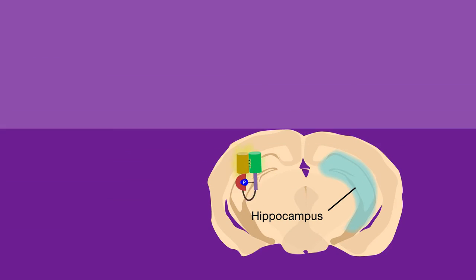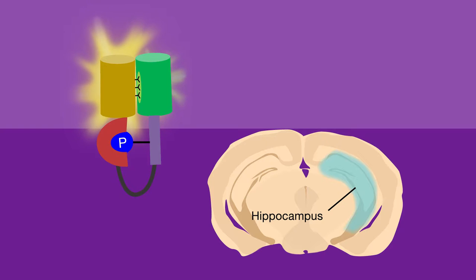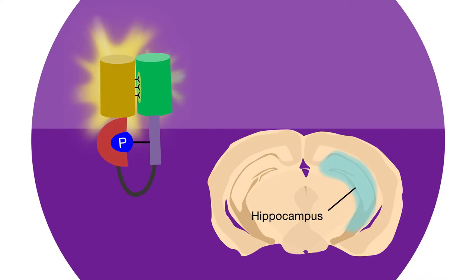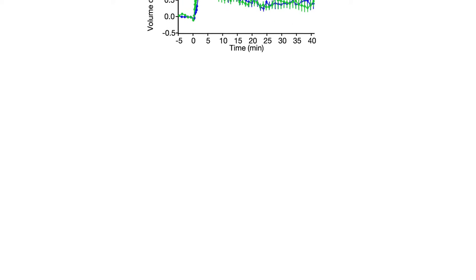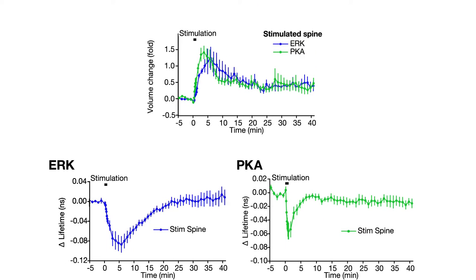Then they expressed the sensors in hippocampal neurons in mouse brain slices and artificially stimulated individual spines. As expected, stimulation made the spines grow and activated both ERK and PKA.